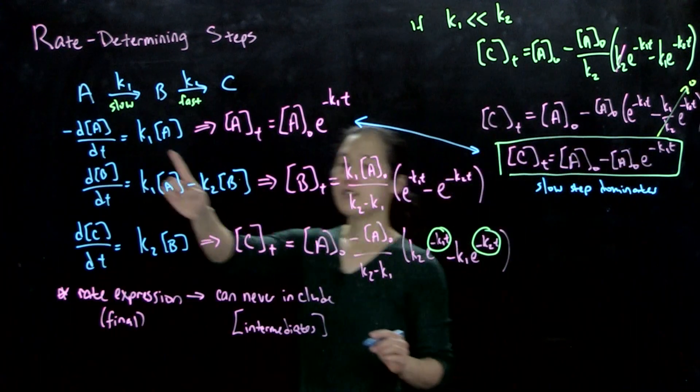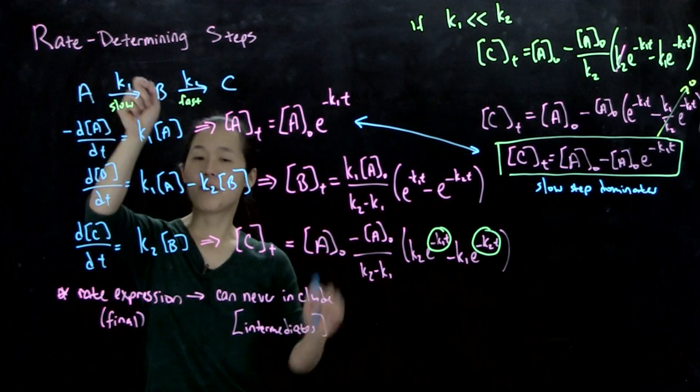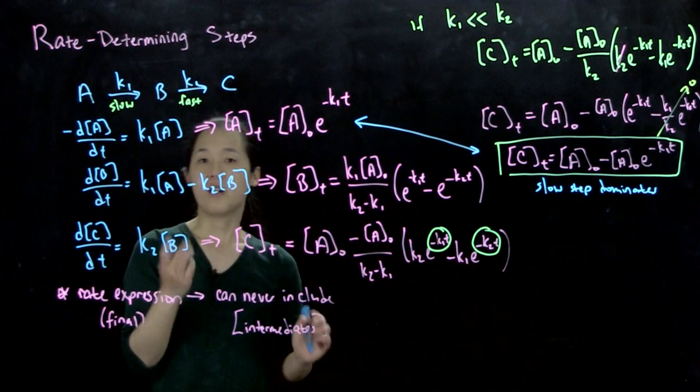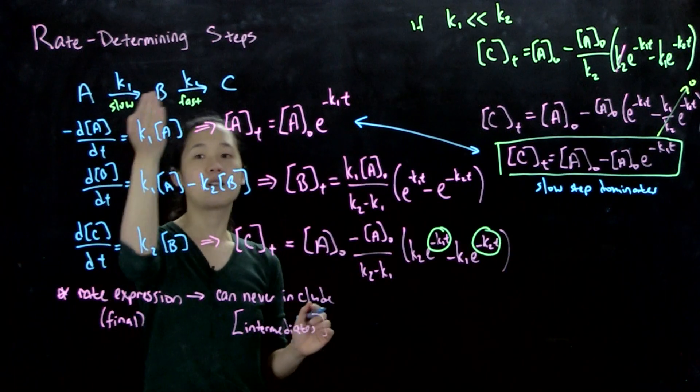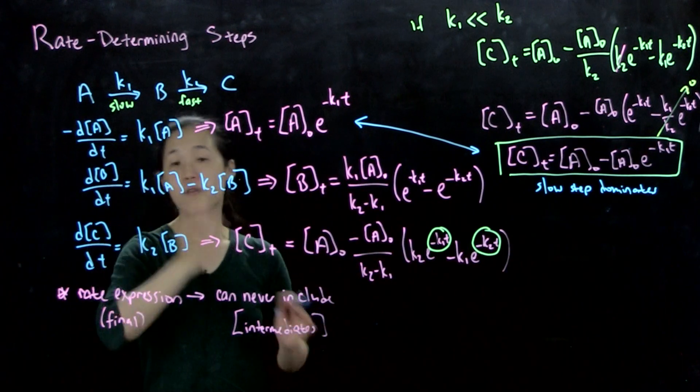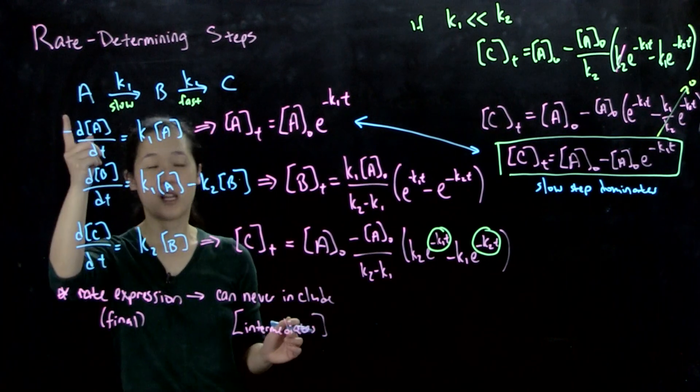Hopefully that makes sense to you. I go slowly, A maybe goes to B, and then B goes to C really quickly. So basically, as soon as you form B, it's going to go to C, and that's why the overall rate law of C is still only first order in A.